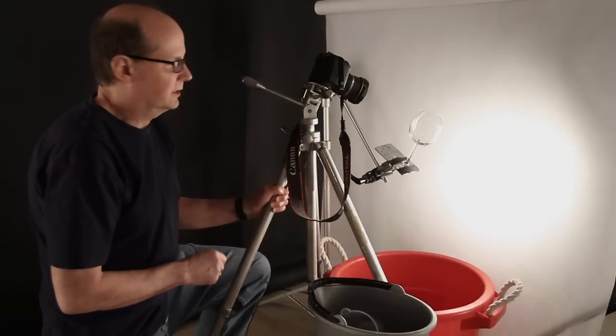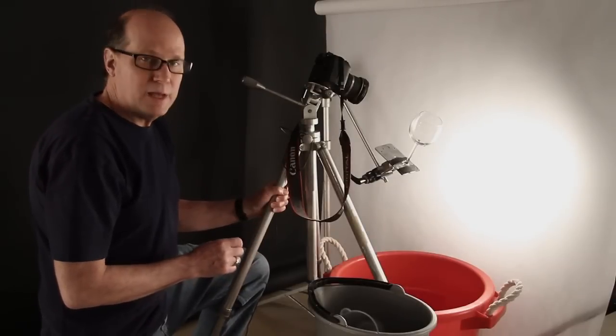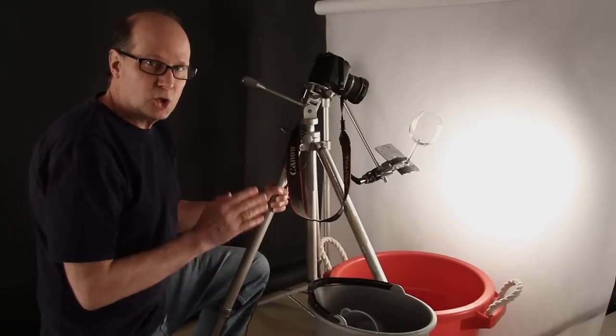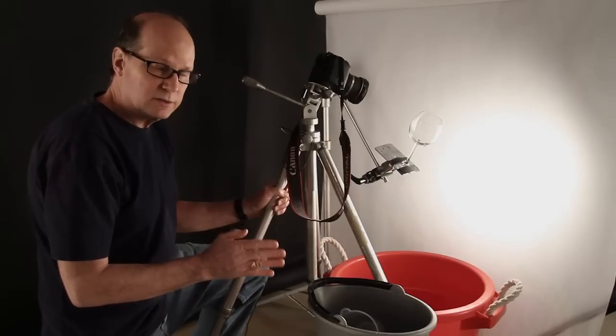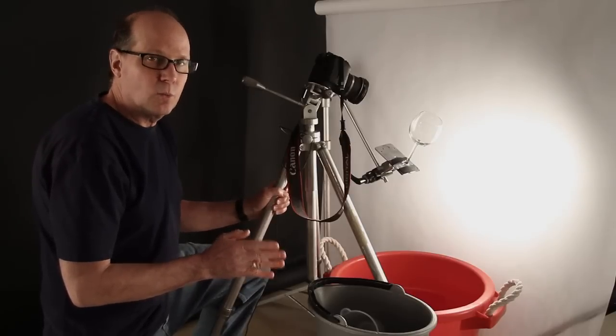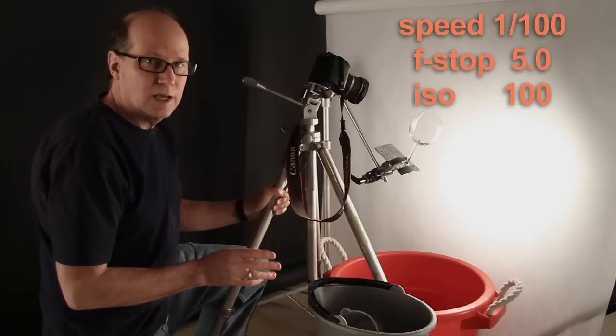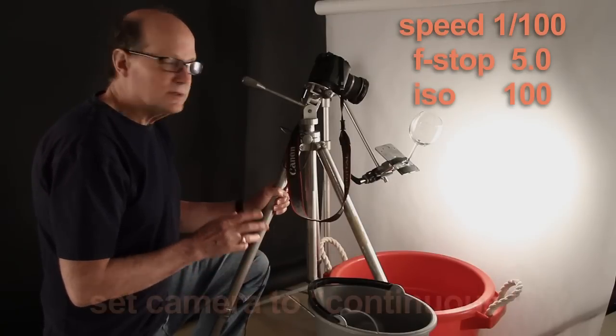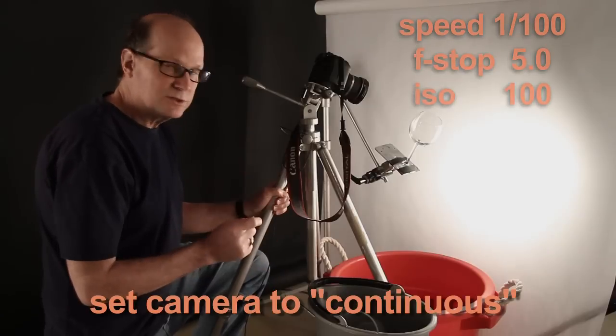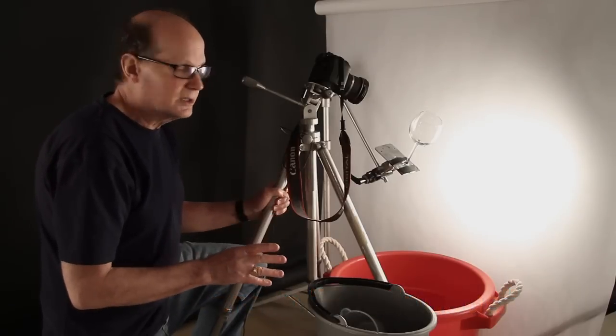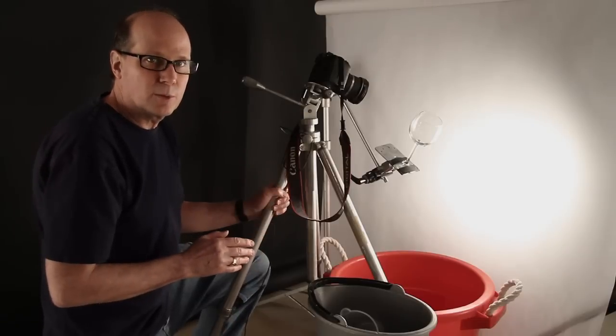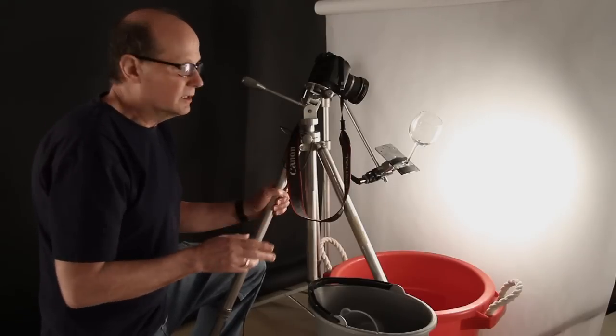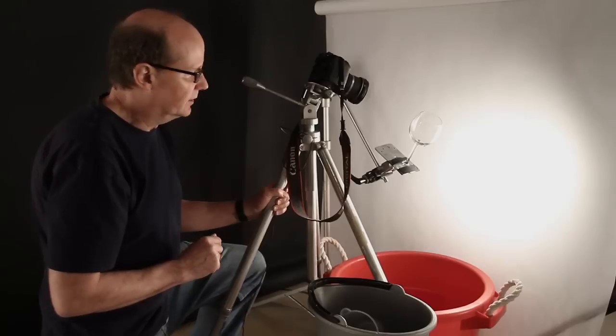Okay let's go over our camera settings. We're using manual and when we get our cursor right in the middle indicating a correct exposure it says 1/100th of a second at f5 and we're at ISO 100. We're also using the camera on continuous so as you press the shutter it fires rapid fire. So as we pour the liquid it's going to catch as many frames in a row as possible getting the different amounts of spill that are happening in the glass.